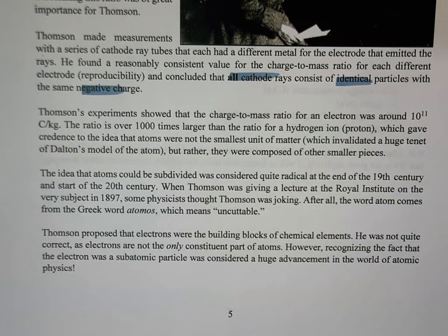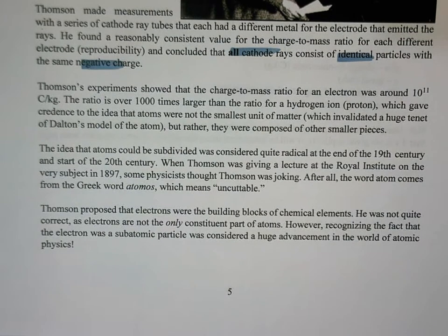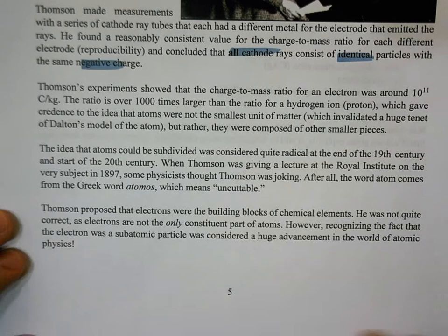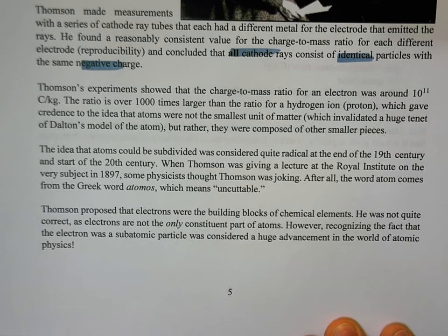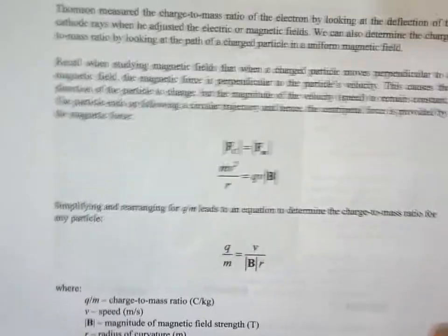Dalton's model was held in high regard — the Greek word 'atomos' means uncuttable — so the dominant theory was that the atom could not be divided. Thomson's theory that atoms are made of smaller bits was difficult for people to accept, but it gained momentum. Thomson did make a mistake in proposing electrons were the building blocks of chemical elements, but his discovery of the electron and the charge-to-mass ratio advanced atomic physics significantly.